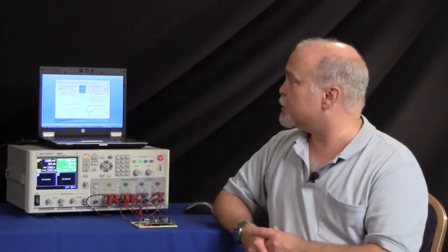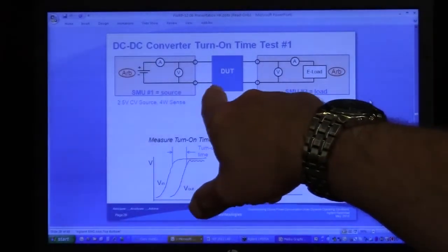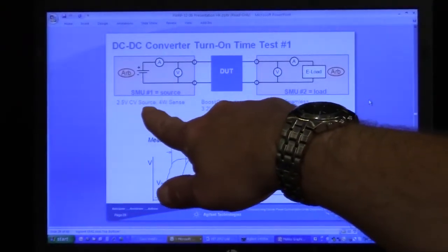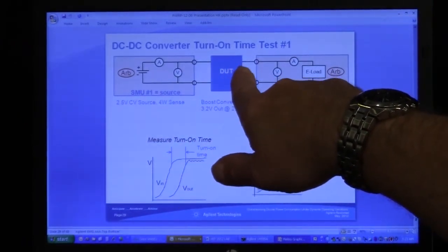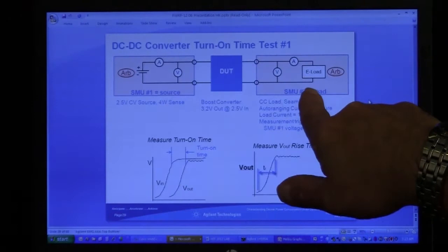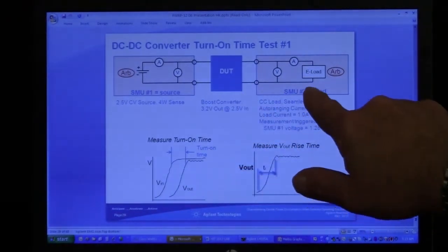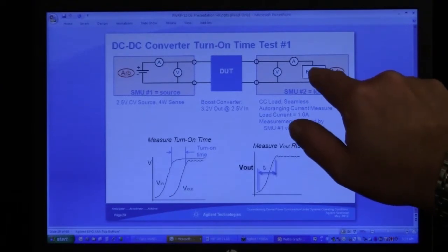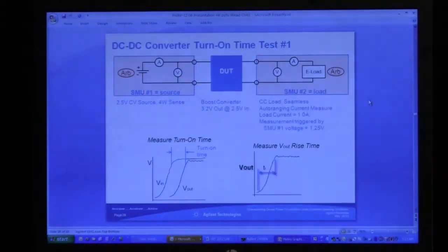And what we're going to be doing is a DC to DC startup test. So I have a block diagram of the system here. In the block diagram you can see SMU number one is set to 2.5 volts constant voltage and that'll be powering the DUT, the DC to DC converter. And SMU number two will be on the output of the DC to DC converter. It'll be set to draw one amp at 3.2 volts. So we're able to source and load the DC to DC converter.